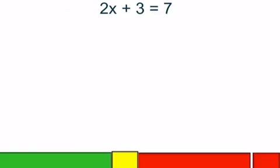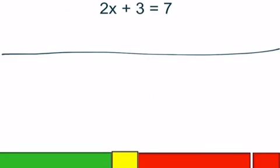Our first equation is 2x plus 3 equals 7. We're going to solve for x, but we're also going to model this solution, so we want to have that visual. First thing we're going to do is draw a little table mat right here. The vertical line I'm drawing down here represents my equal sign, dividing the left and right sides. Left of the equal sign, right of the equal sign.